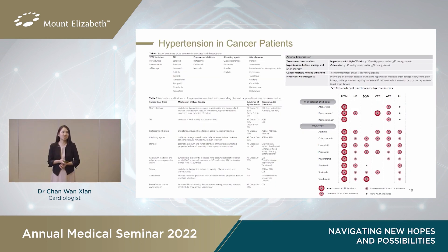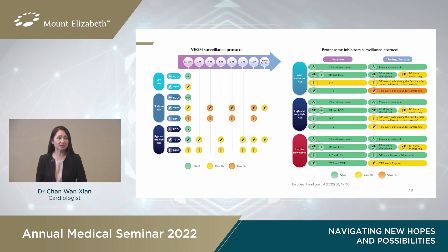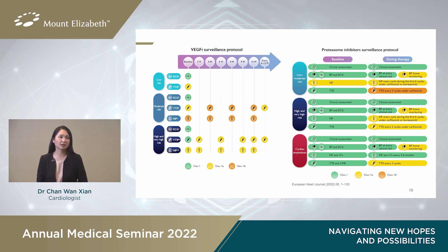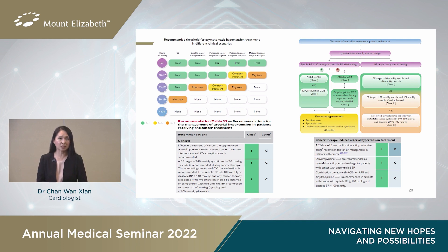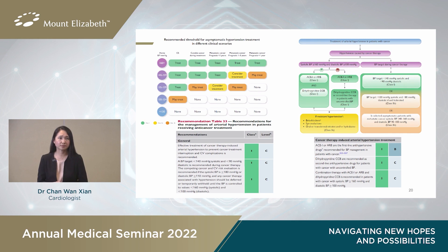Hypertension is a common adverse effect in patients receiving VEGF inhibitors and proteasome inhibitors. It is important for baseline cardiovascular assessment, ECG, and daily blood pressure monitoring during cancer treatment with these medications. With every dose increase, regular blood pressure monitoring is required, reducing to every two to three weeks once stable. The target blood pressure is less than 140/90. If blood pressure exceeds 180 systolic or 110 diastolic, the medication should be stopped and hypertension treatment initiated — first line being ACE inhibitors and ARBs. Once controlled below 160/100, chemotherapy can be restarted.